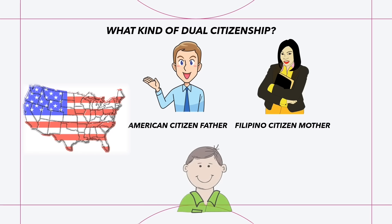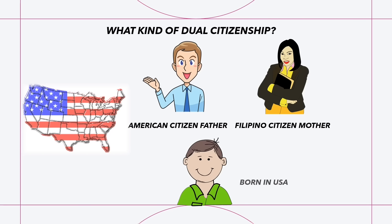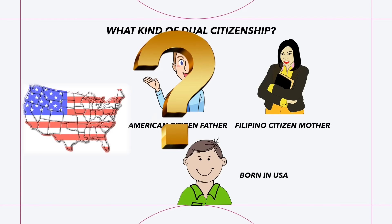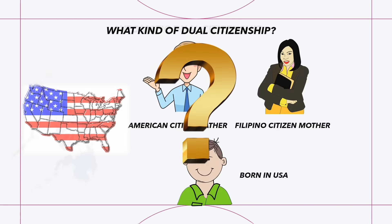Let's analyze this. A child was born in the Philippines of an American citizen father and a Filipino citizen mother — this is the most common scenario. What is the type of dual citizenship? Another situation: a child was born in the USA of an American citizen father and a Filipino citizen mother. What is the type of dual citizenship?